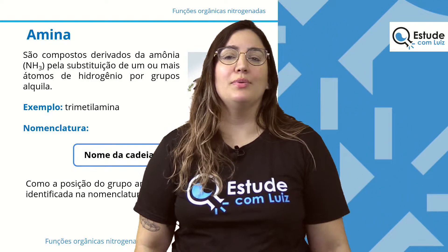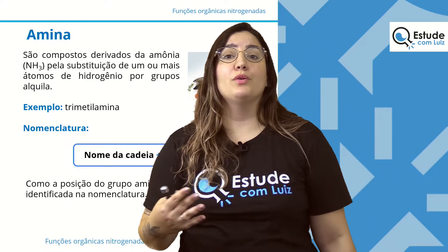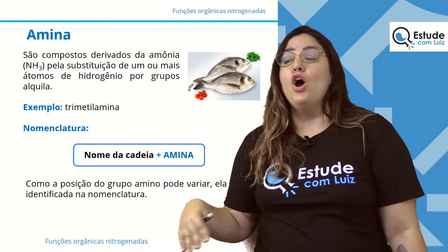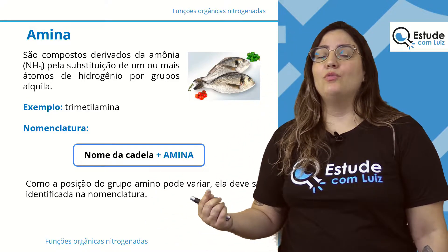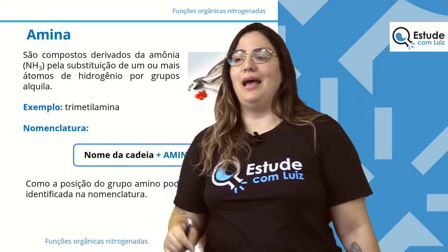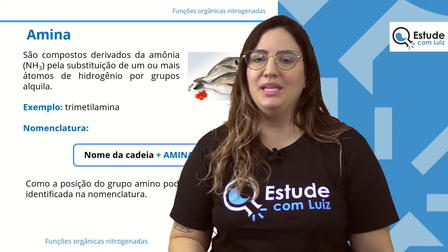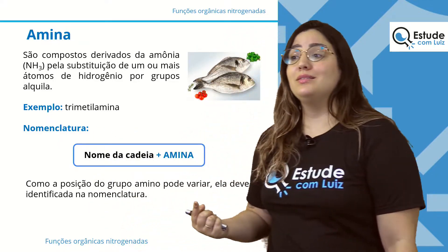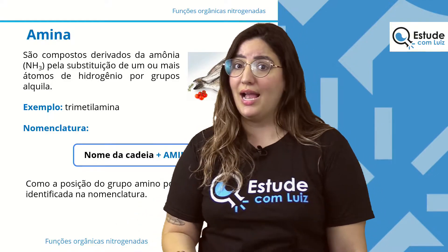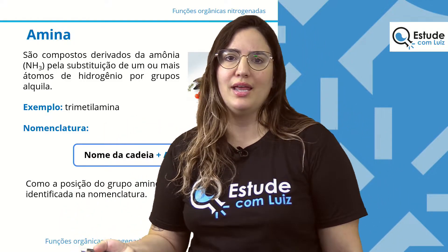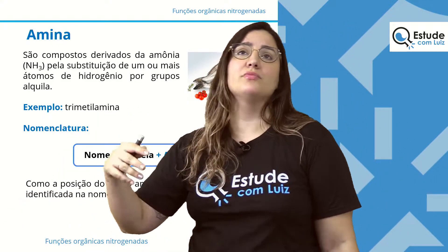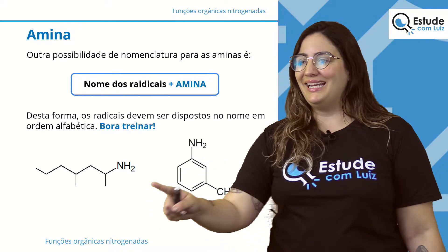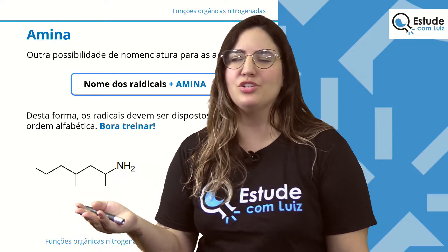Nomenclatura das aminas é bem simples. A gente tem dois tipos: nomeia a cadeia e coloca o sufixo 'amina' no final, ou utiliza os radicais. Um detalhe importante: dependendo da amina, principalmente quando é primária, o grupo amino — NH₂, NH ou N sozinho — pode variar de posição. Então você vai ter que indicar a posição desse grupamento, semelhante ao que a gente faz com outras funções.